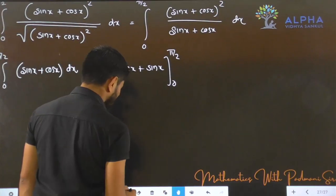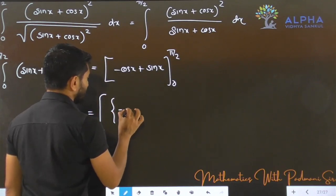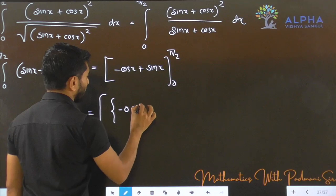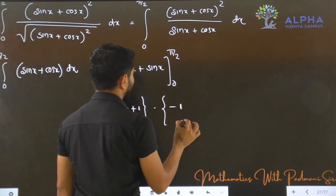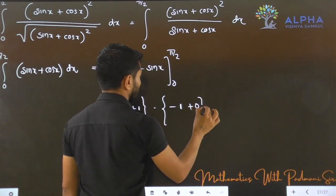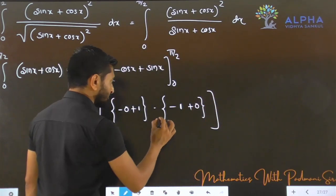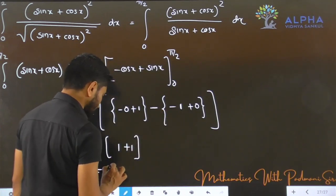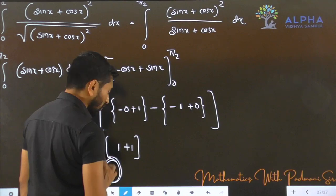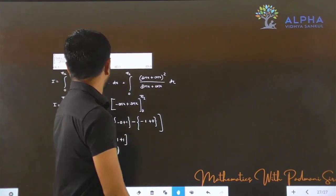Now this is a simple case where the same expression appears in numerator and denominator. Put the limits, your answer will be cos pi by 2 minus cos 0, which equals 0 minus negative 1, so 1. This gives us 2, which is your option number B.